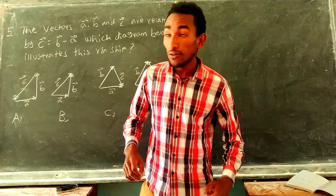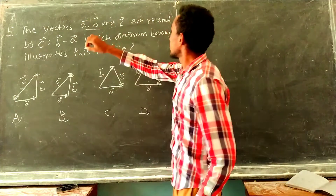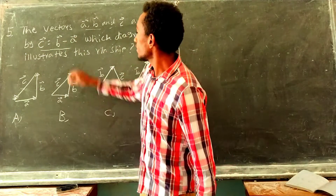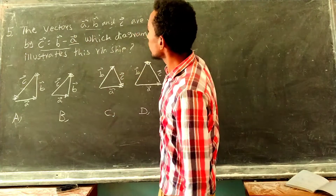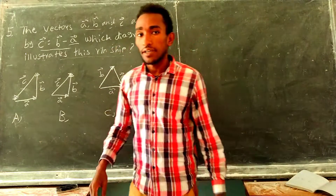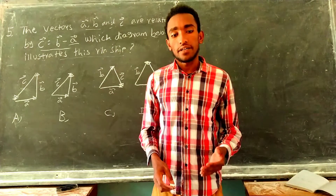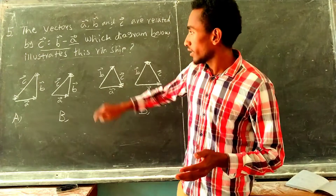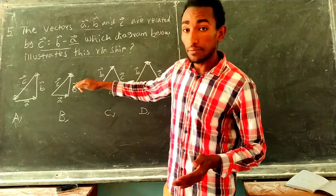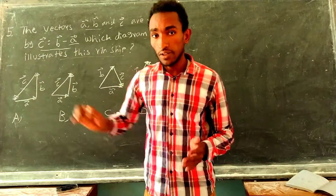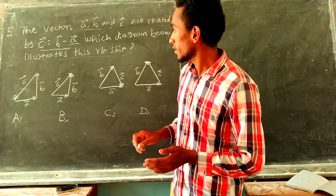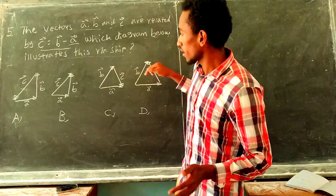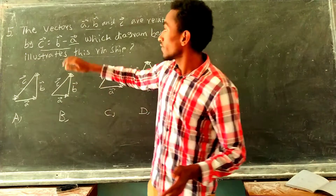Vectors A, B and C are related by vector C equal to vector B minus vector A. Which diagram will illustrate this relationship? This is a vector diagram — a triangular vector arrangement.